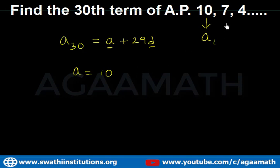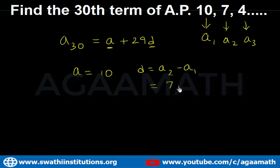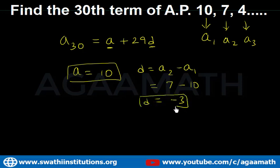Now d, the common difference, equals a2 minus a1. So d = 7 minus 10 = minus 3. Remember, children: whenever you want to find any term of an AP — whether the 20th, 50th, or 100th term — you must know two things: a (the first term) and d (the common difference).